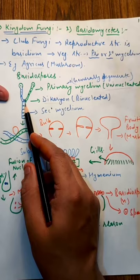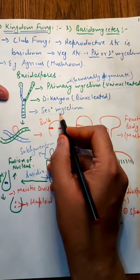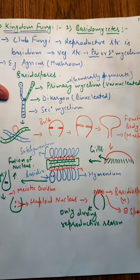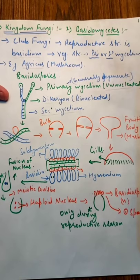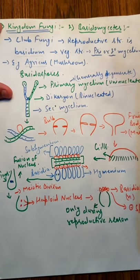This is known as secondary mycelium. Primary mycelium was uninucleated. The nuclei fuse and the di-karyon secondary mycelium is generated.